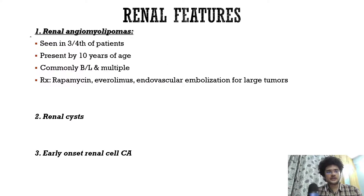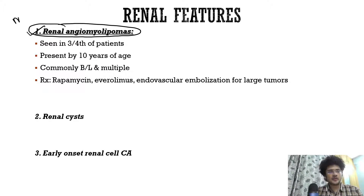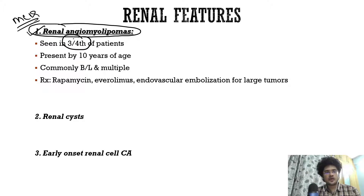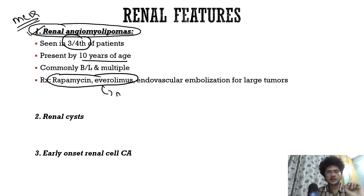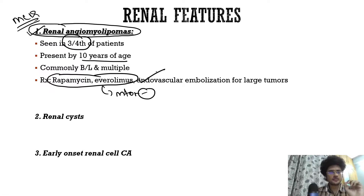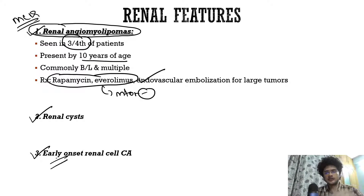For renal features, renal angiomyolipomas are the most important renal manifestation, seen in three-fourths of patients, usually presenting by 10 years of age, and are commonly multiple and bilateral. They respond well to mTOR inhibitors; endovascular embolization can be used for larger lesions. Renal cysts also occur. Renal cell carcinoma is not greatly increased, but when it does occur it tends to have early onset.